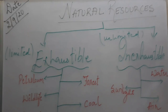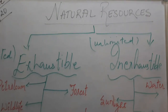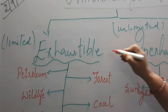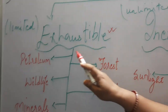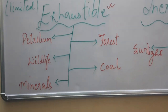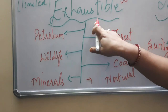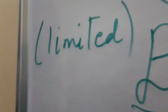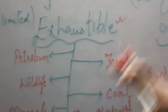Natural resources have been classified into two groups: number one, exhaustible, and number two, inexhaustible. The exhaustible category includes petroleum, forest, wildlife, coal, minerals, and natural gas. Exhaustible means it is limited in quantity — once you use it, you cannot bring it back. So they are limited.